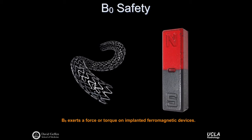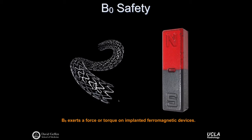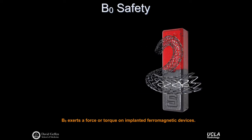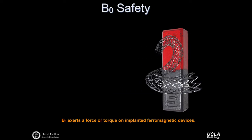Another B0 safety concern is that the B0 field will exert both a force and a torque on implanted ferromagnetic devices. Increasingly, most medical devices are non-ferromagnetic — nitinol, titanium, stainless steel — but older devices still pose the potential risk of being torqued and pulled towards the main magnetic field, potentially dislodging a device and resulting in damage to the device or local tissues, causing bleeding, tears, or potentially worse.